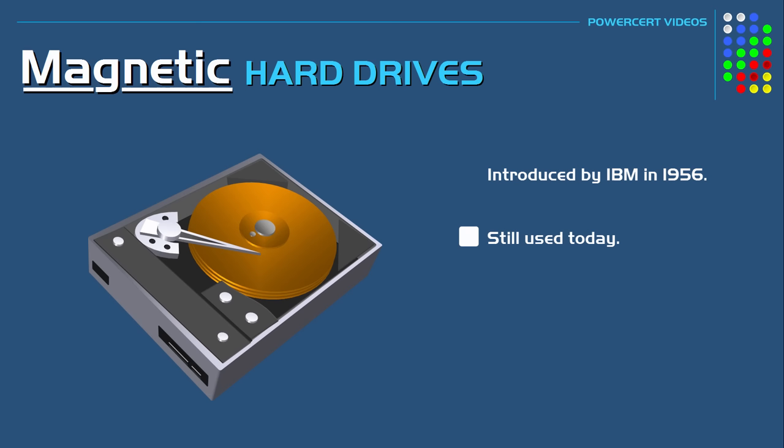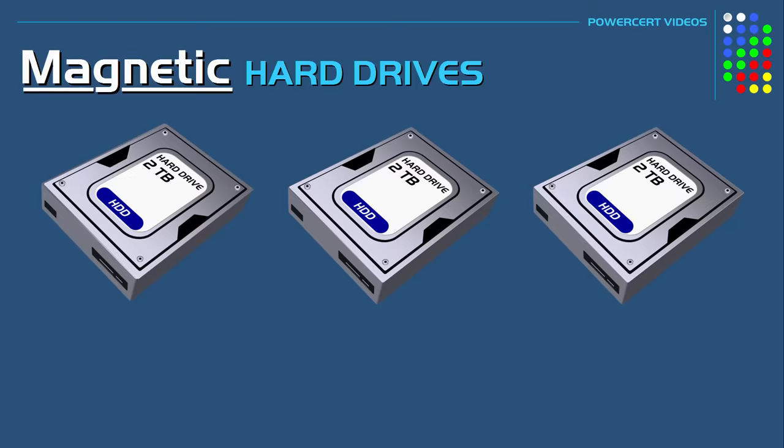The hard disk drive is a sealed case that contains magnetic disks, and these disks are where the actual data is stored. The disks rotate at high speeds, and as they do, the actuator arm will either write data to the disks or read data from the disks, depending on what the user wants to do.